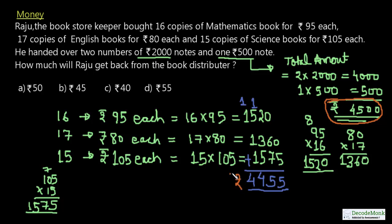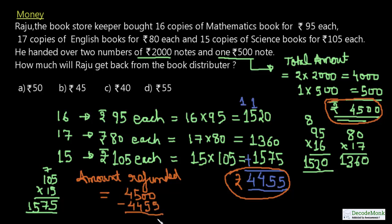The total amount given is ₹4500, and the total amount required is ₹4455. The amount refunded from the storekeeper will be 4500 - 4455. Carrying out the subtraction: 10-5 = 5, 9-5 = 4, giving us ₹45. The answer is ₹45.